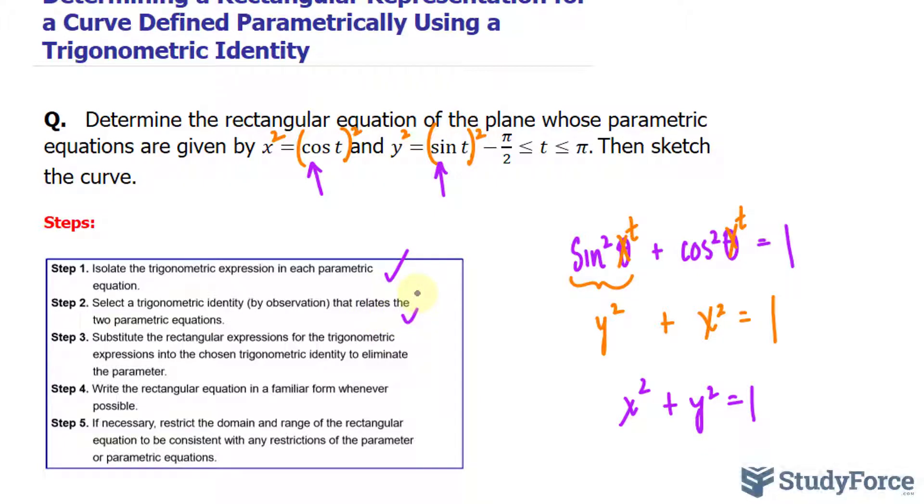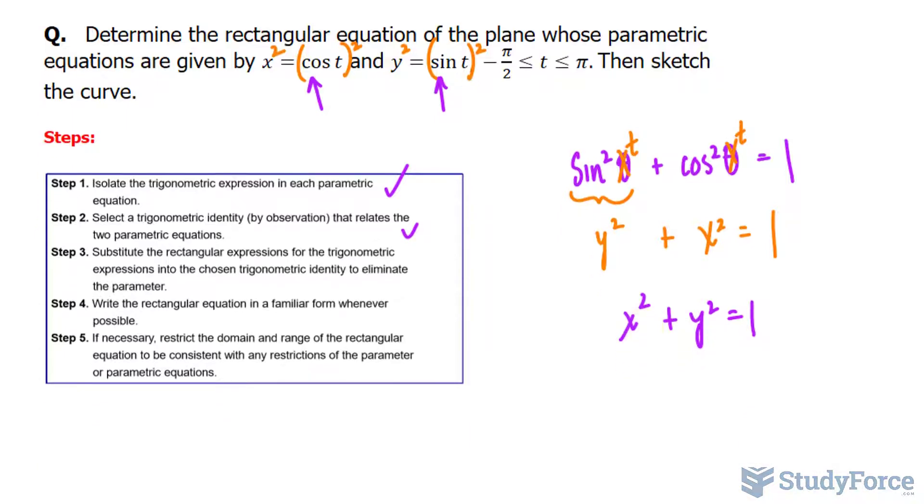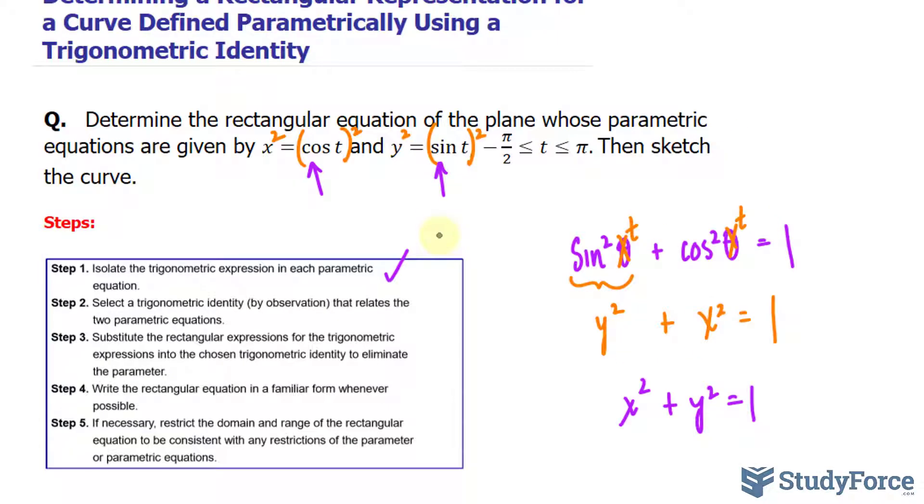Then it says substitute the rectangular expression, now it's in rectangular form, notice that it's terms of x and y, no more t's. That takes care of step two and three. Notice that this equation now is purely in rectangular form, we have it in terms of x and y only. So it can be graphed technically.